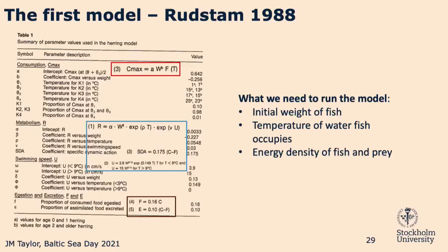The first model for Baltic herring came from Stockholm University — Lars Rudstam, in 1988. It looks complicated; these are all of the mathematical parameters that go into the model, usually derived from lab experiments, and usually fish-specific. But pay attention to the different equations highlighted here in the same colors as the last slide.